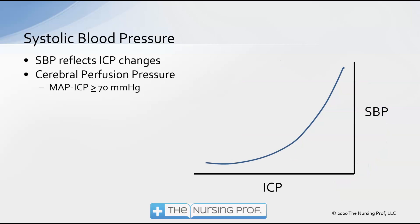Lastly, we look at systolic blood pressure. If the patient is completely unconscious, you can still assess systolic blood pressure to get an idea of whether changes in intracranial pressure are occurring. As intracranial pressure increases, systolic blood pressure must increase in order to maintain cerebral perfusion. Cerebral perfusion pressure should be maintained at about 70 mmHg or greater. To calculate it, take the mean arterial pressure and subtract the intracranial pressure.